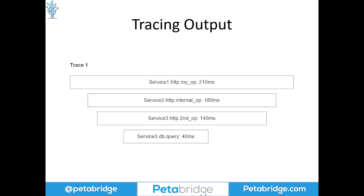Most major distributed tracing engines have drivers that support Ruby, .NET, Node.js, and Java. All of that data can still be combined back together into a single histogram. This restores coherence and debuggability across our systems, and that's why we should talk about the benefits of distributed tracing.